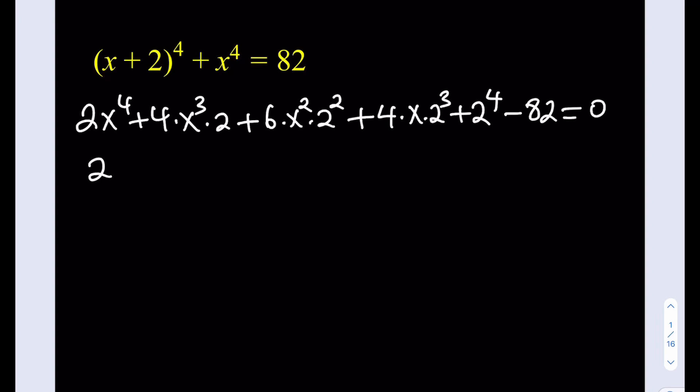This will be 8x cubed plus 6 times 4 is 24 and 4 times 8 is 32. 16 minus 82 is going to be negative 66.